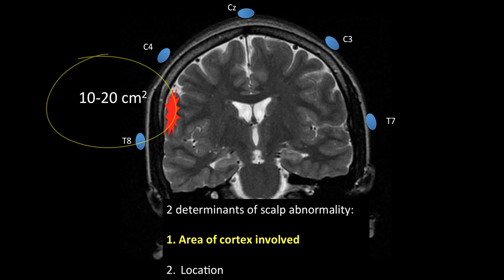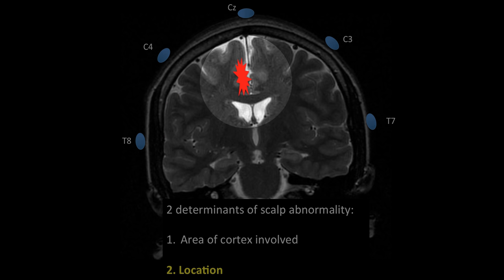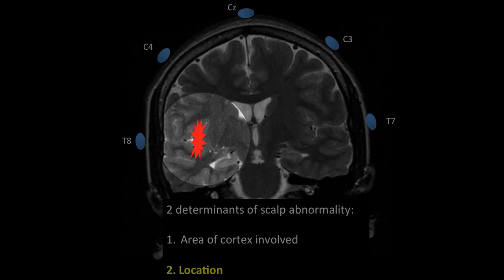The other main determinant of a scalp abnormality on EEG is the location of the synchronous cortical activity. In this example, I have shown a very superficial area of cortex involved, which might be more likely to be picked up by scalp EEG electrodes. If a deeper area of cortex was involved, such as in the cingulate gyrus, shown here, in the mesial temporal structure, shown here, or in the insular cortex, shown here, it may be less likely that such abnormalities would be picked up by the more distant scalp electrodes.